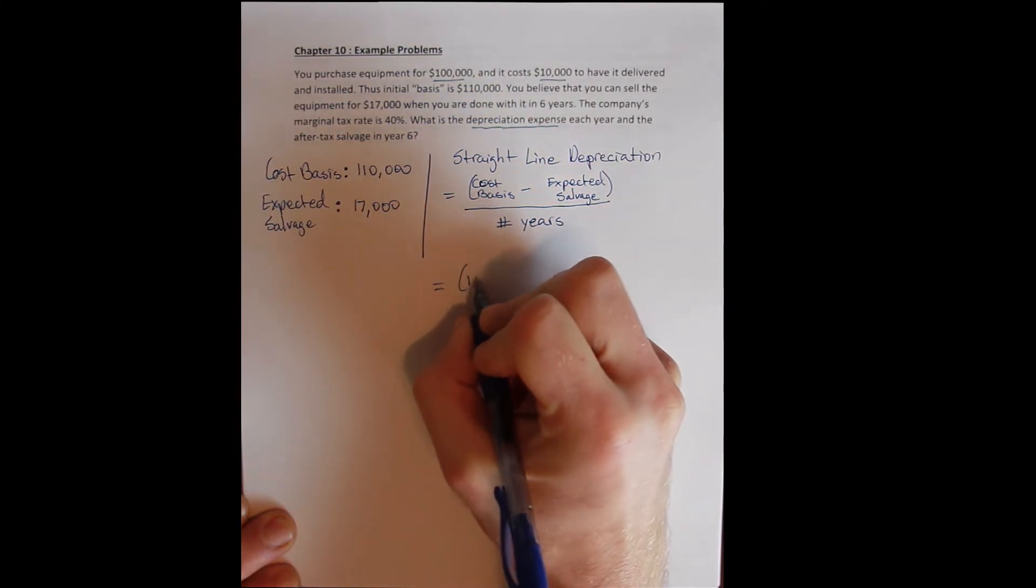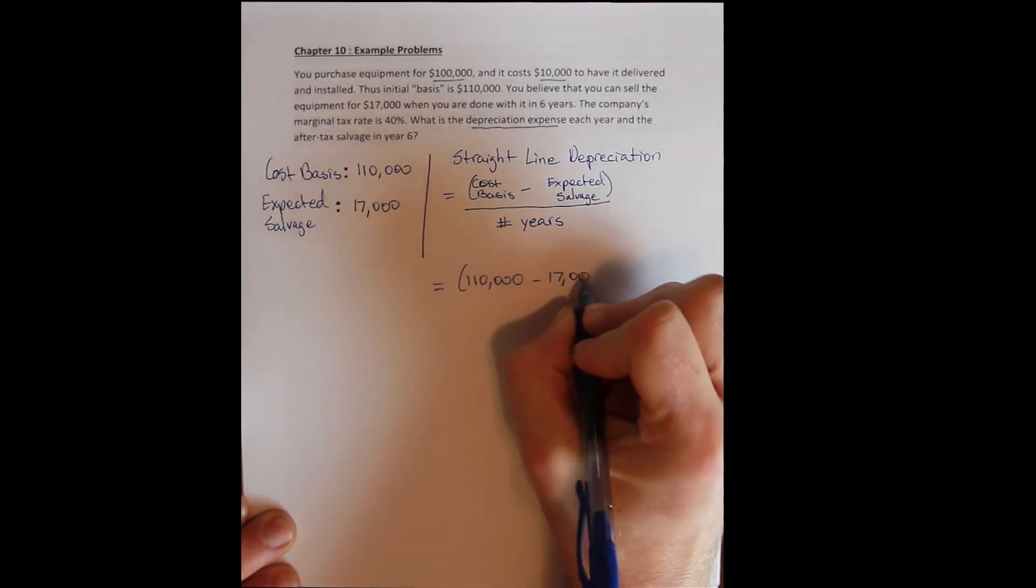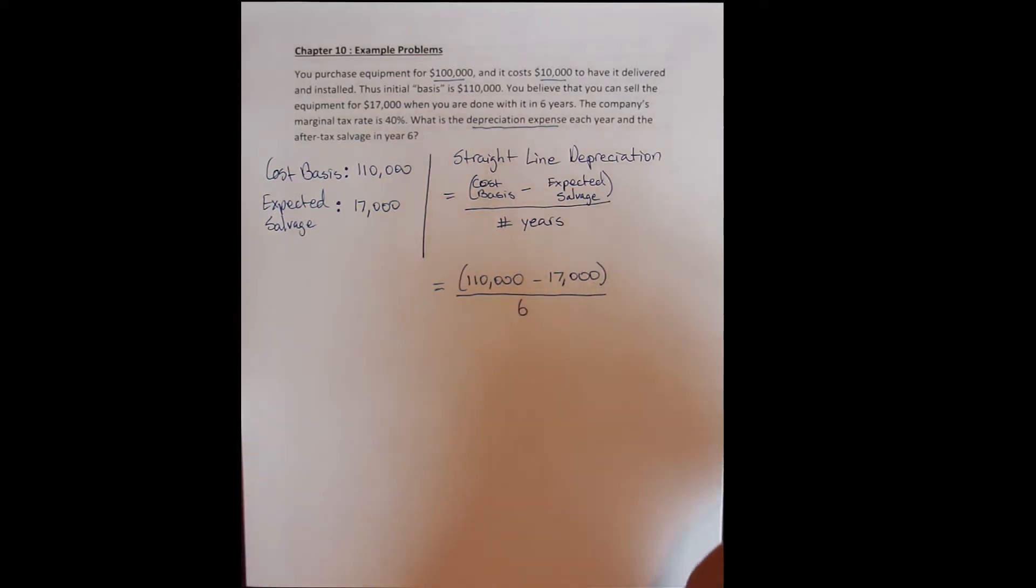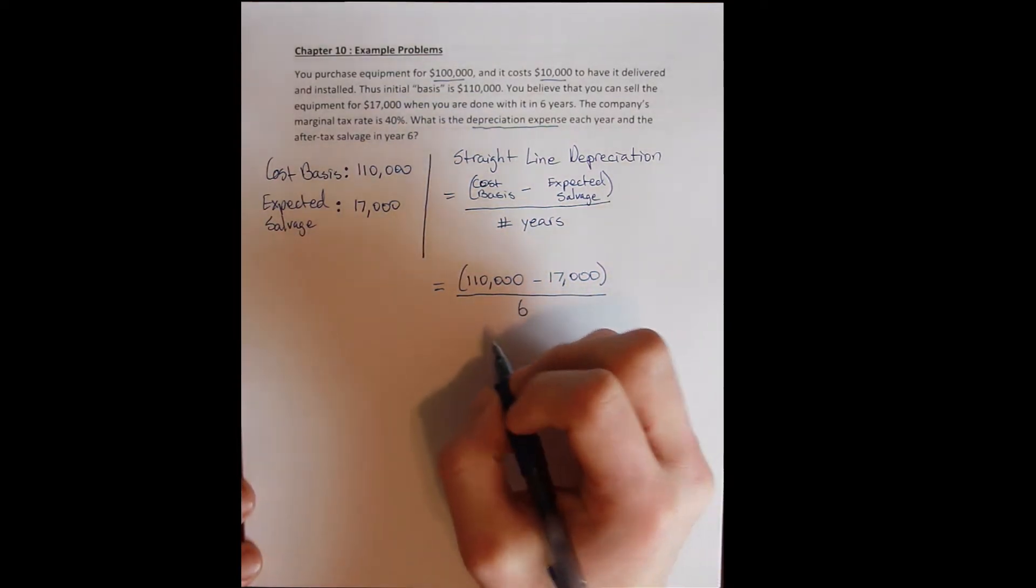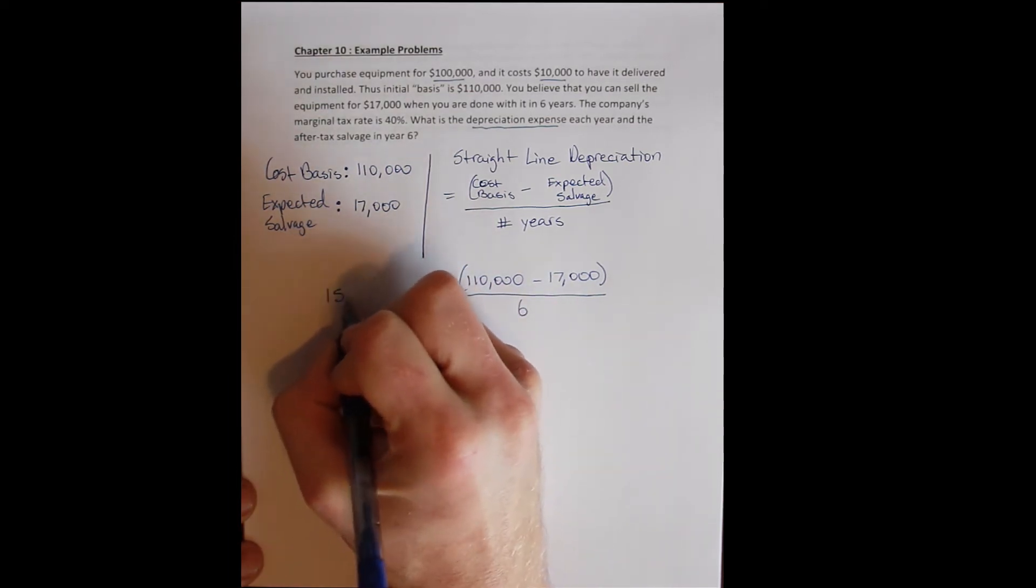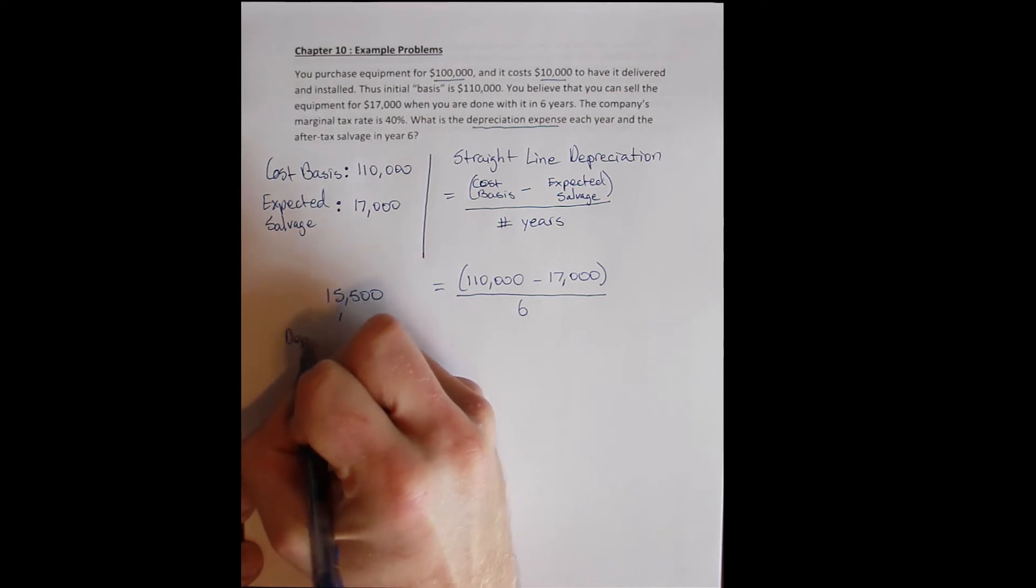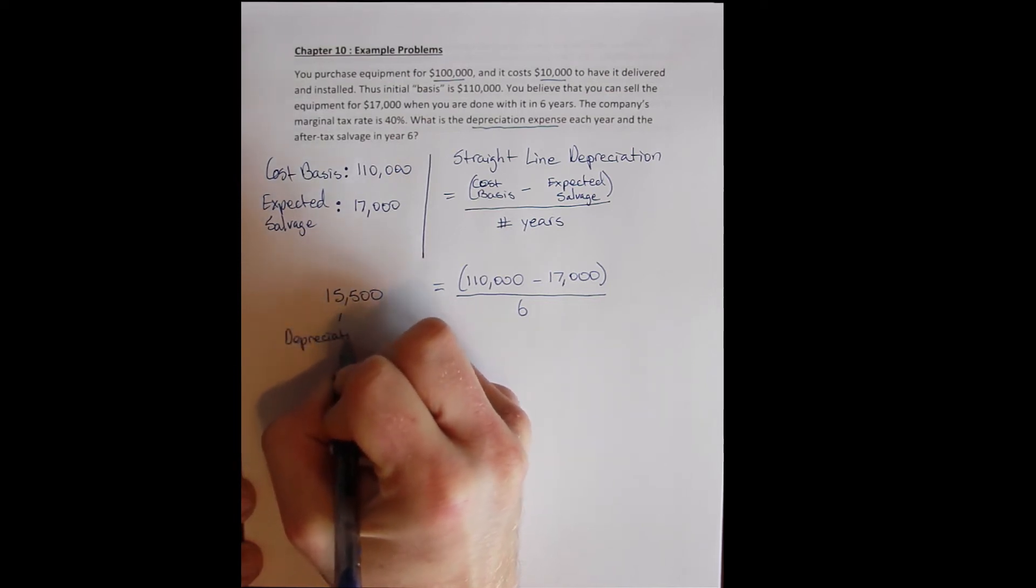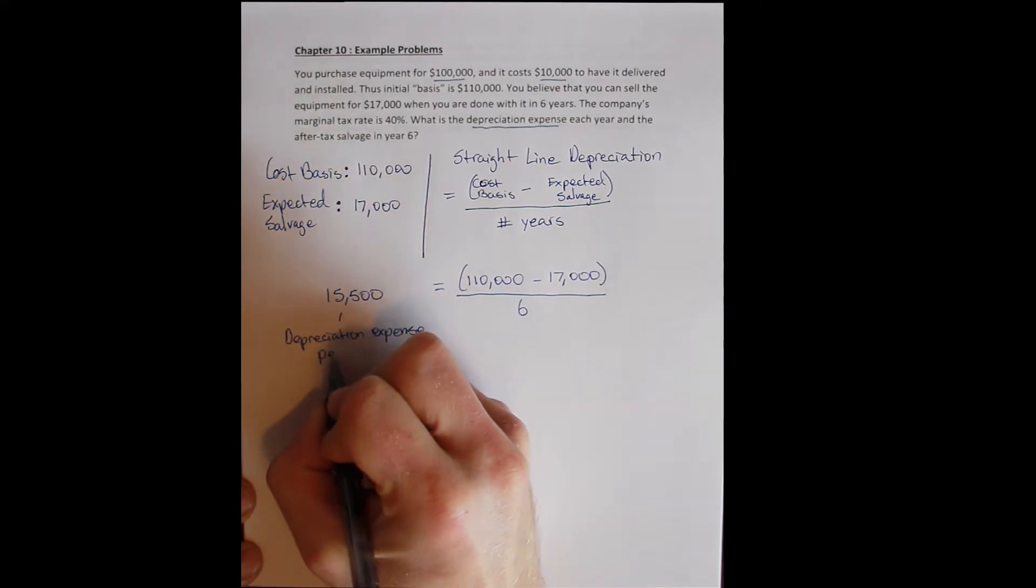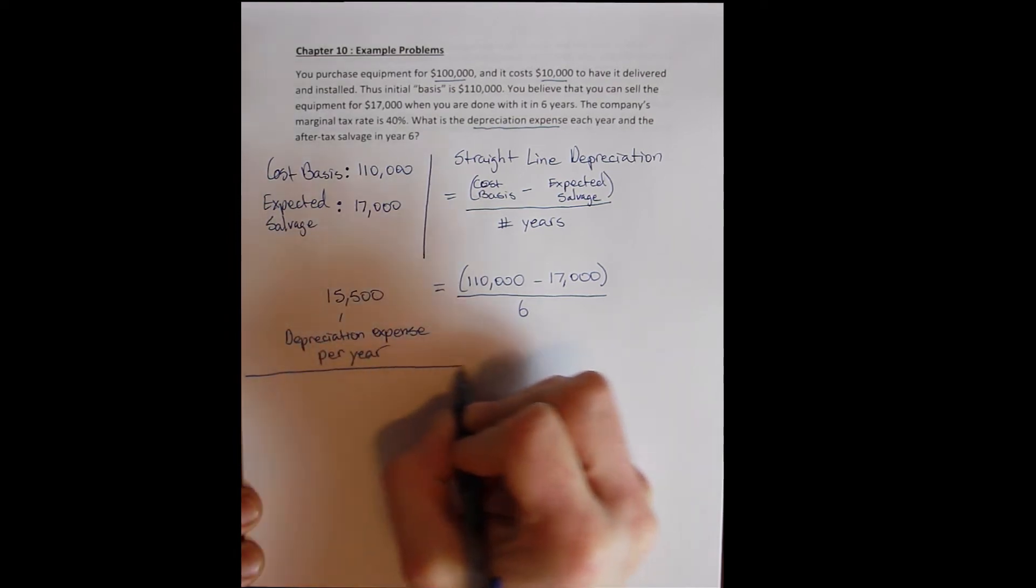We have a cost basis of $110,000. We have an expected salvage value of $17,000. And we expect to be able to use the asset for six years. And so our depreciation per year is $15,500. This is depreciation expense per year. That's part one.